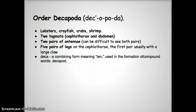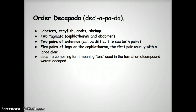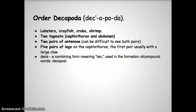Like the arachnids — if you've been to the arachnid table — decapods have a cephalothorax and an abdomen, so they have two body sections. They have two pairs of antennae, although it can be difficult to see both pairs. They have five pairs of legs on the cephalothorax, and the first pair usually has a large claw. The legs are attached to the cephalothorax, not the abdomen — that's important both in arachnids and here in crustaceans, specifically the decapods.